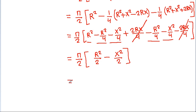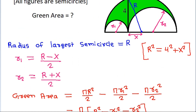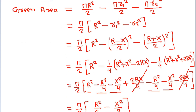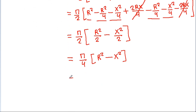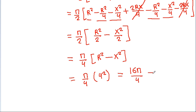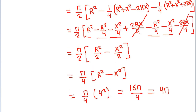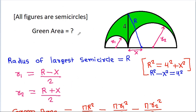And it simplifies to (π/4) times (R² minus X²). From the earlier relation, R² minus X² equals 4² which is 16. So it is (π/4) times 16, which equals 4π. So the green area is 4π.